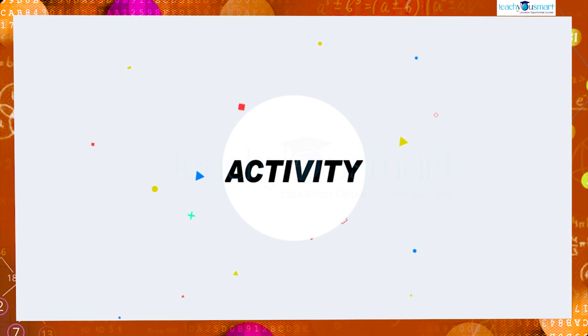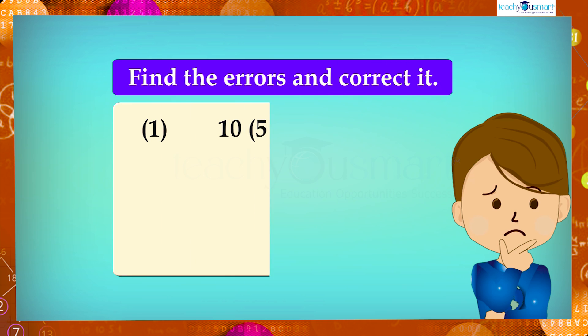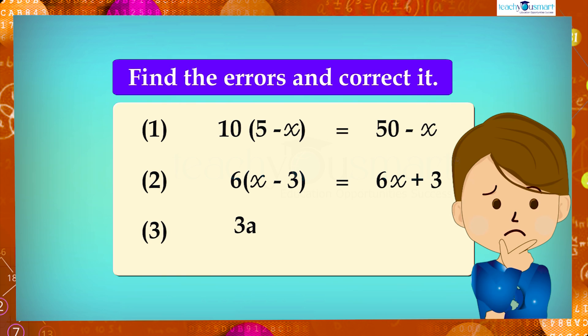Before winding up, let's check how much you understood by doing an activity. Find the errors and correct it. First one: 10 multiplied by 5 minus x equals 50 minus x. Second one: 6 multiplied by x minus 3 equals 6x plus 3. And the third one: 3a plus 1 whole divided by 6 equals a by 2 plus 1.